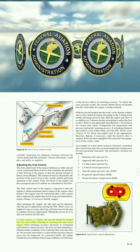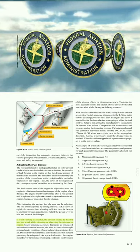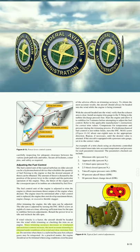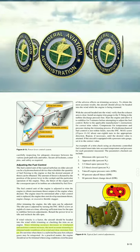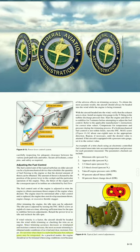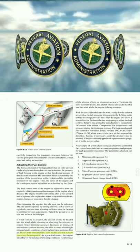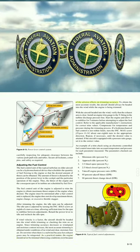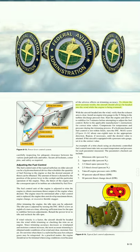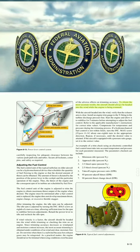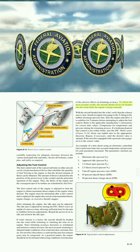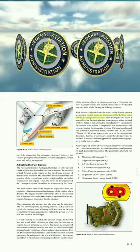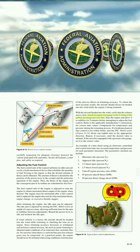Retard the power lever to idle and recheck the idle RPM. If wind velocity is a factor, the aircraft should be headed into the wind while trimming or checking the trim, since trimming accuracy decreases as wind speed and moisture content increase. The most accurate trimming is obtained under conditions of no wind and clear, moisture-free air. Do not trim when there is a tailwind because hot exhaust gases may be reingested. The engine should never be trimmed when icing conditions exist. To obtain the most accurate results, verify that the exhaust area is clear, install an engine trim gauge to the T-fitting in the turbine discharge pressure line, start the engine, and allow it to stabilize for five minutes before attempting to adjust the fuel control.